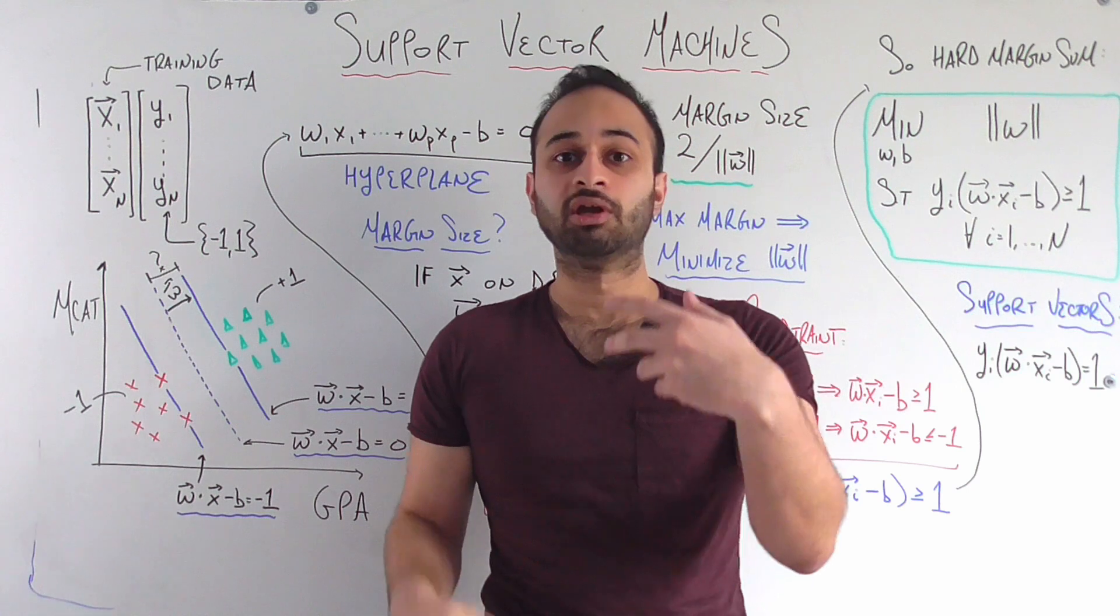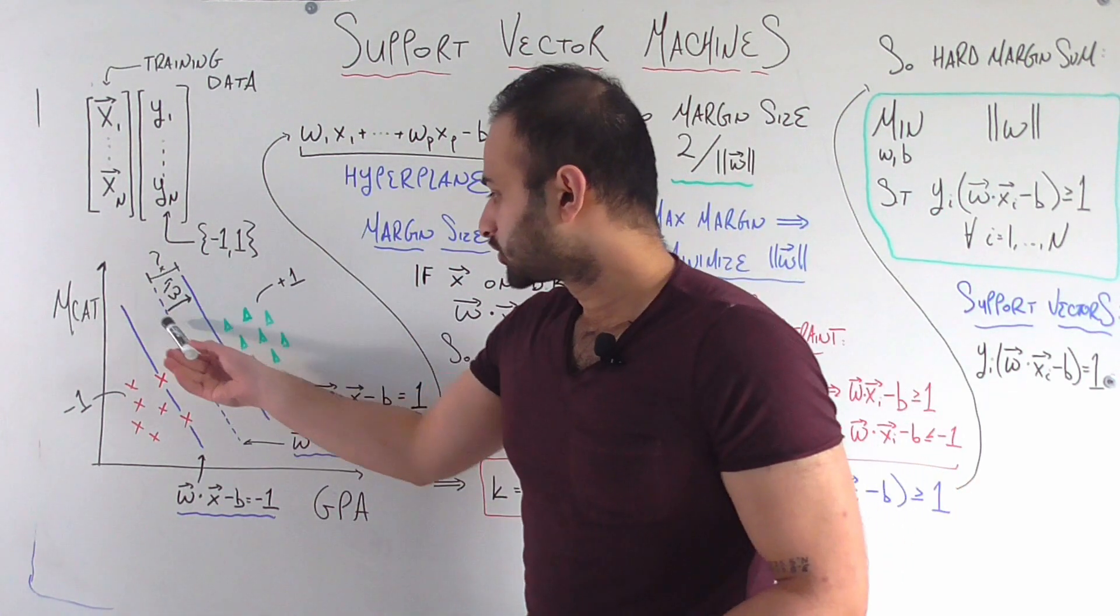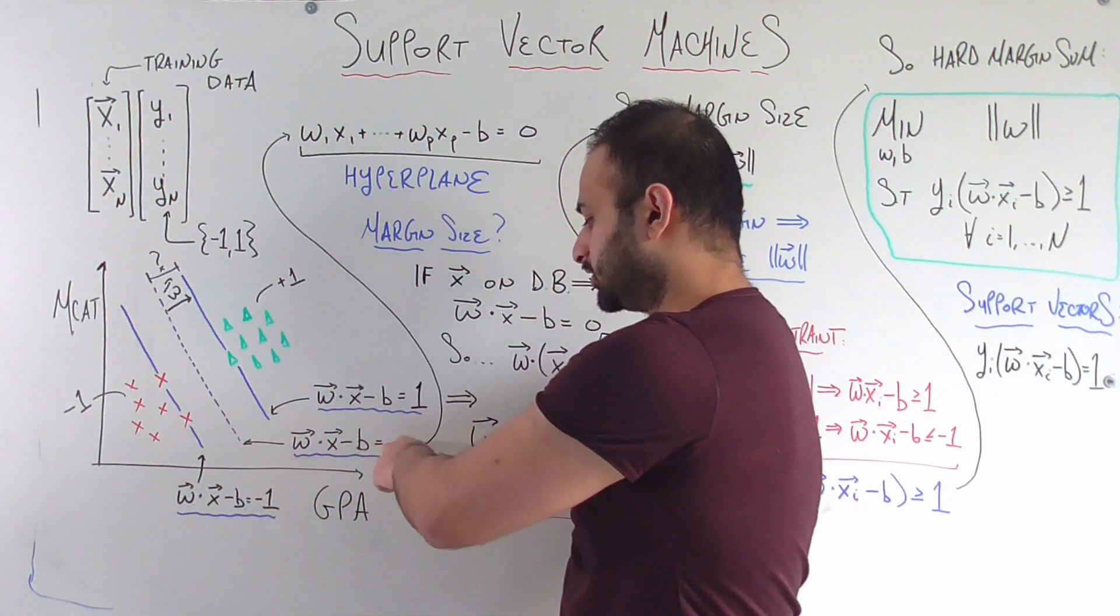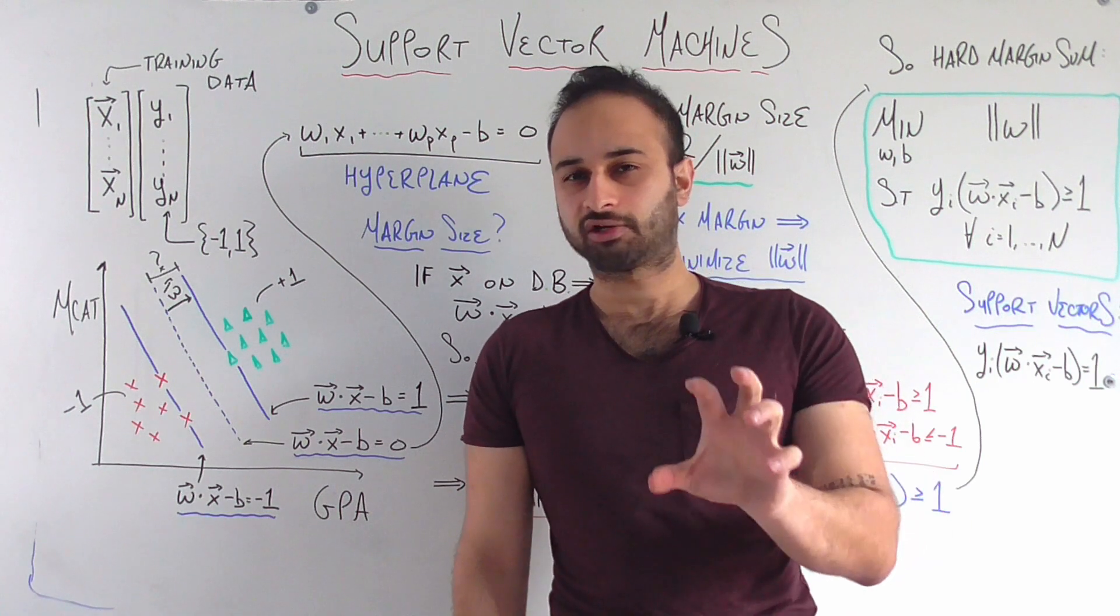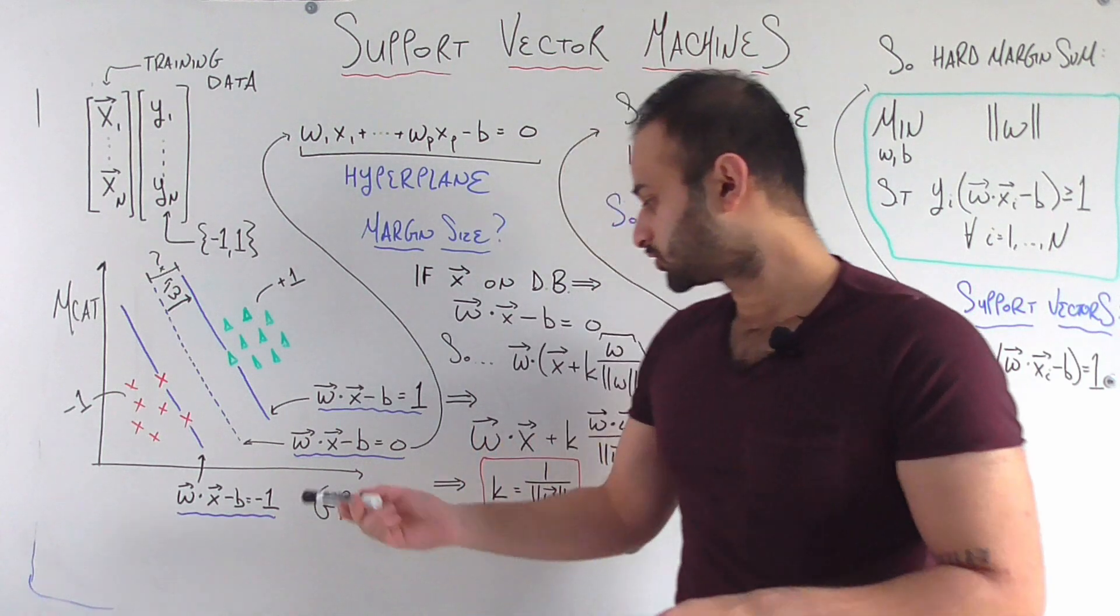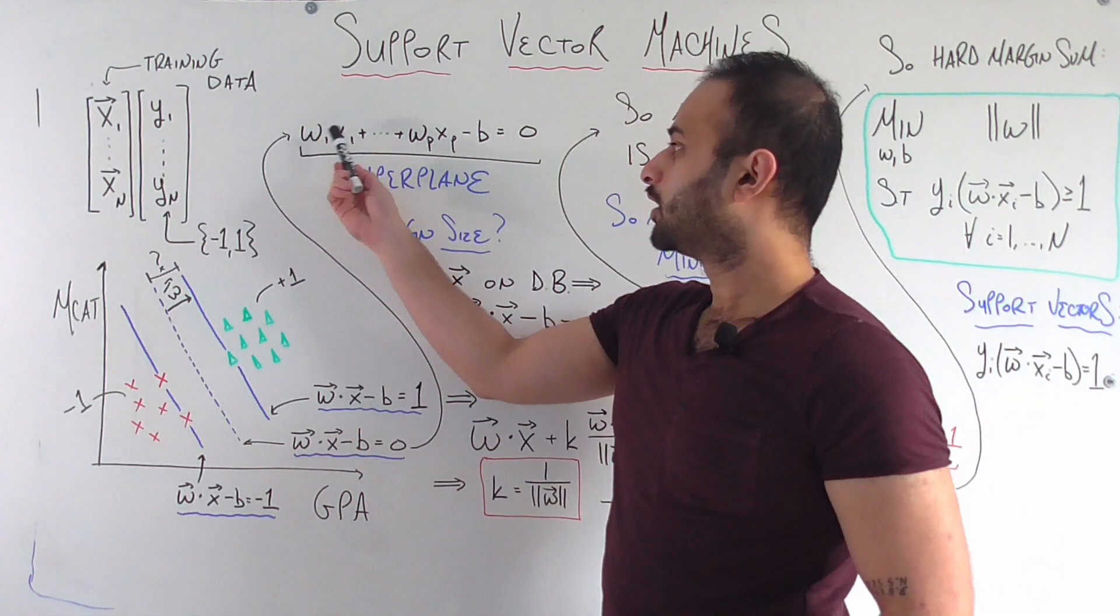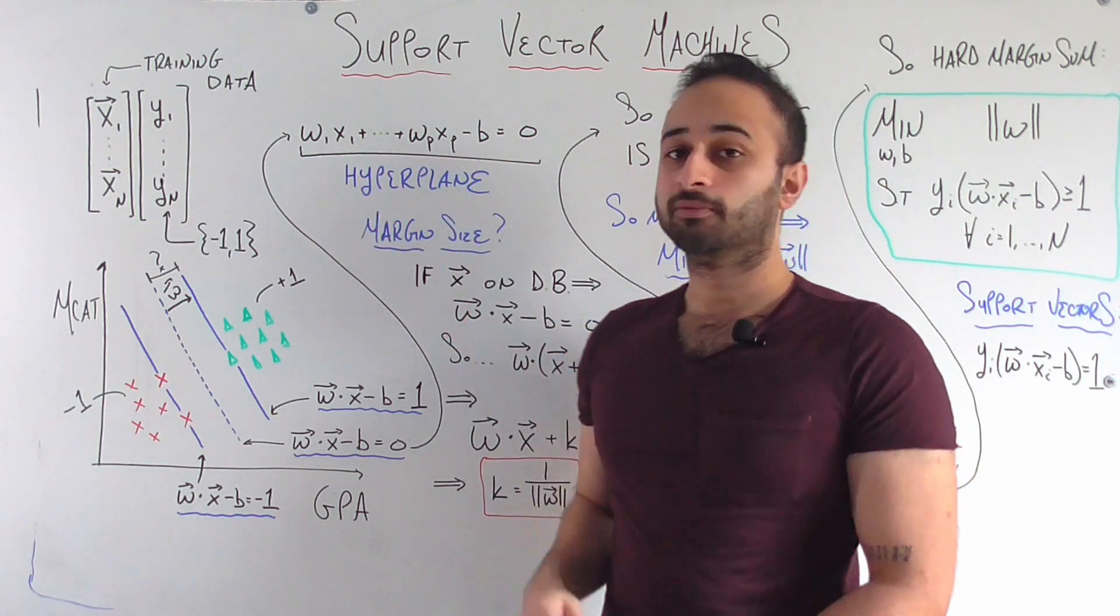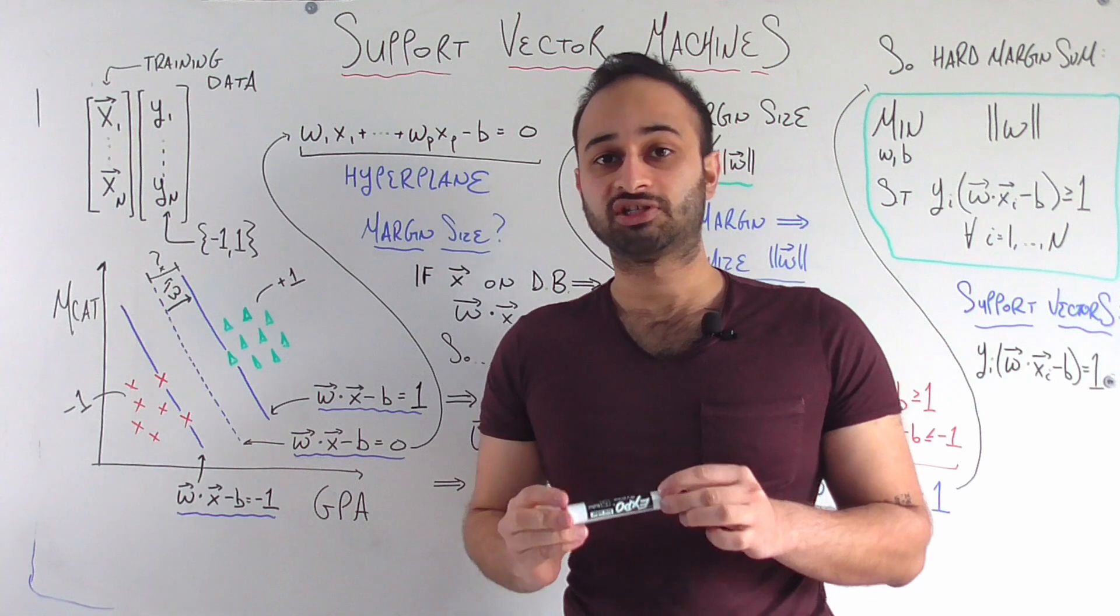Now let's actually assign some equations to these lines. This blue dashed line is going to be called w dot x minus b equals 0. It helps in this video if you have some familiarity with vector algebra, but let me expand this for you so you can see better what's going on. If I expand this equation, I get w1x1 plus all the way to wpxp minus b equals 0.